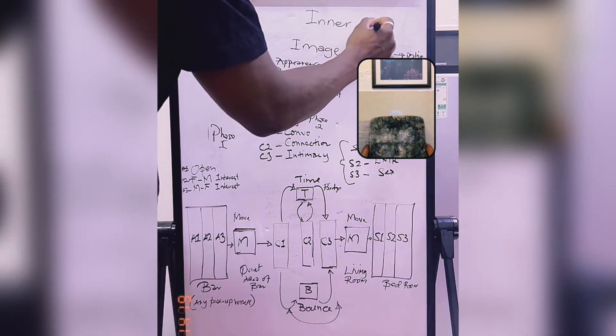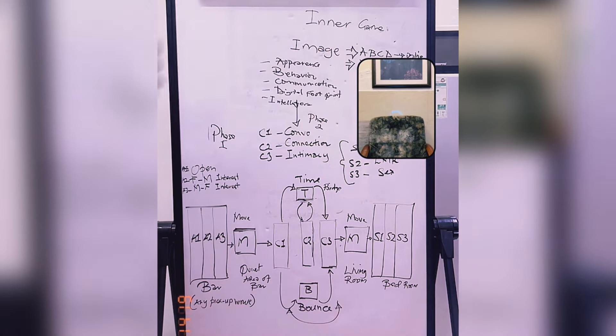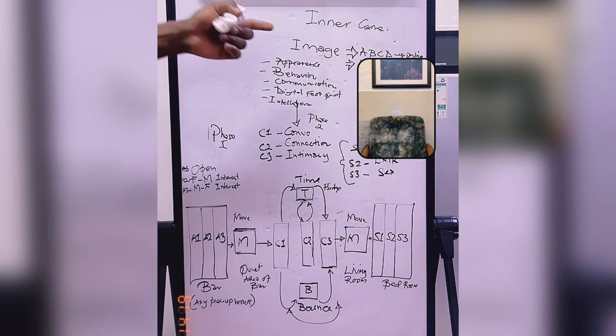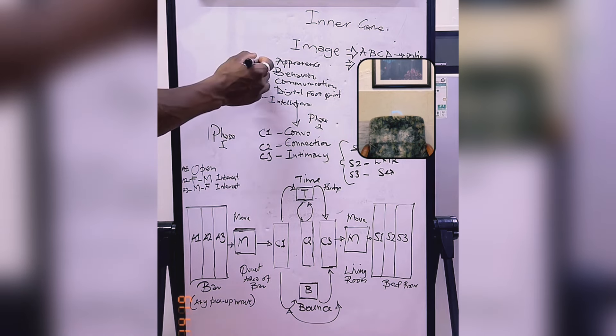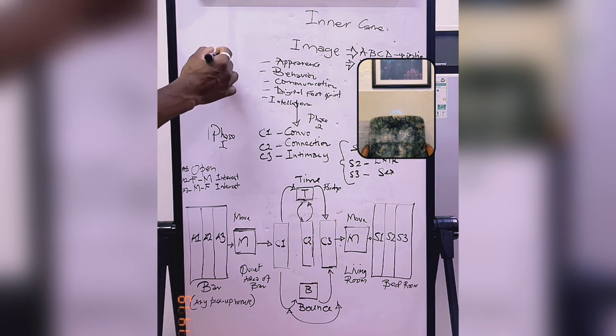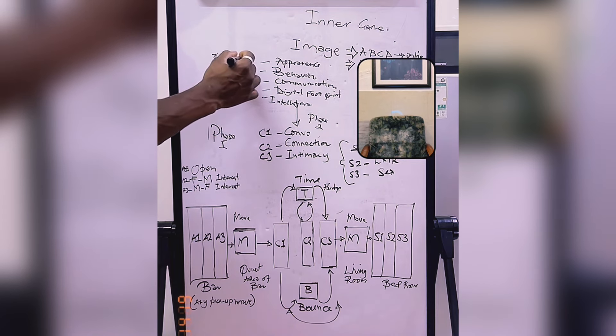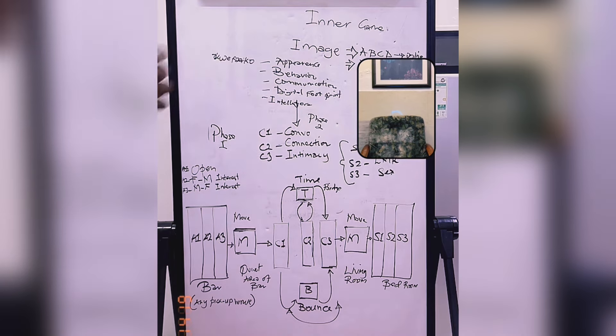This is why you're failing with women. Inner game - the first element is always going to be your image. Your image means your appearance. Therefore, you need to focus on your appearance, how you look, your behavior, how you appear.